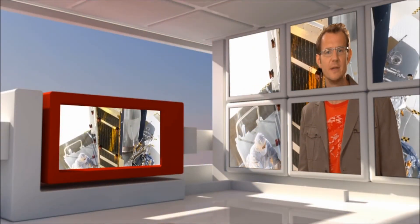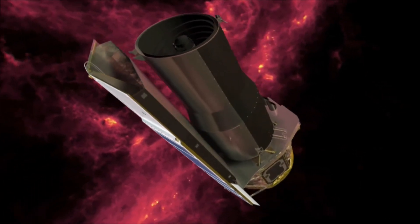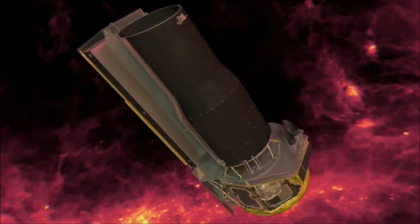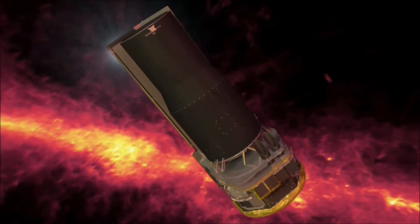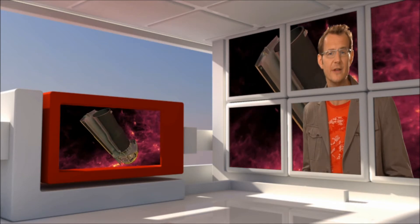Spitzer has a mirror that is only 85 cm across. But the telescope is hiding behind a heat shield that protects it from the Sun, and its detectors are tucked away in a dewar filled with liquid helium. Here, the detectors are cooled down to just a few degrees above absolute zero, making them very, very sensitive.